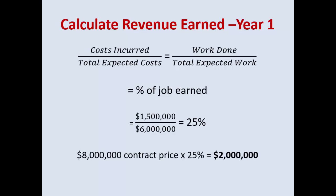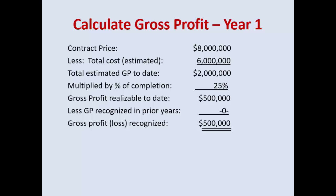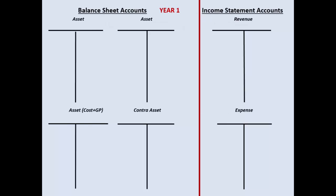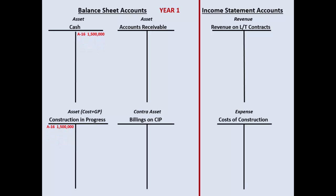Calculating revenue in year one: focus on expenses first, then work backwards. Cost incurred to date ($1.5M) divided by total expected cost ($6M) equals 25% complete. Multiply 25% by the $8 million contract price — you earned $2 million this year. Contract price $8M less total estimated cost $6M equals $2M gross profit; 25% of that $2M is $500,000 capitalized into CIP. Use T-accounts for all four balance sheet accounts and income statement accounts.